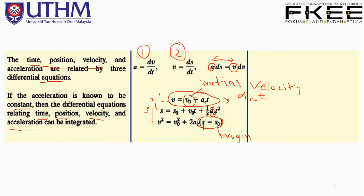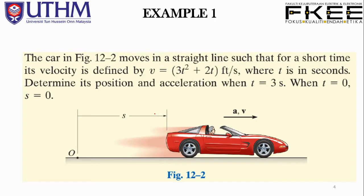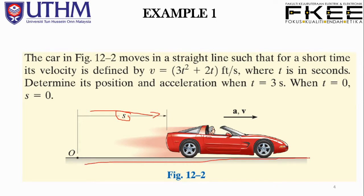For a better understanding, let's look at Example 1. A car moves in a straight line such that for a short time its velocity is defined by v = 3t² + 2t feet per second, where t is in seconds. Determine its position and acceleration when t = 3 seconds, given that s = 0 when t = 0.